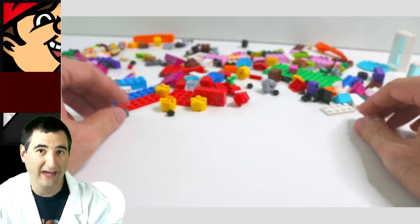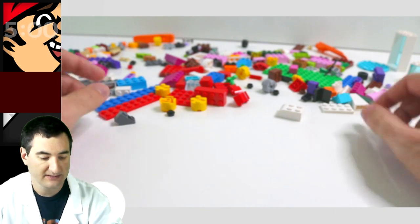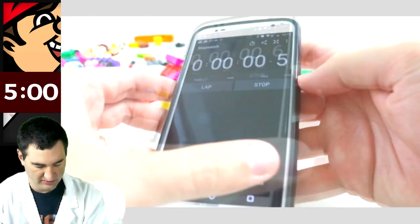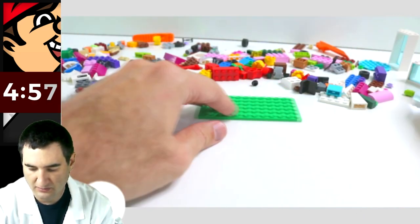So now we get to build a house. We got 221 pieces here. Let's see what we can do to build a house. Oh wait, we got to put the timer on. Start.